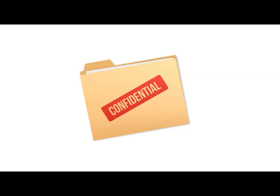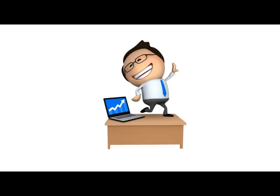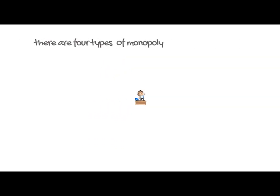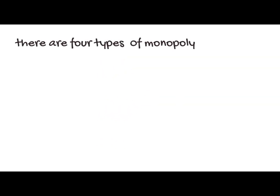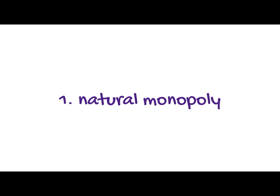Monopolies also possess some information that is not known to other sellers. Characteristics associated with a monopoly market make the single seller the market controller as well as the price maker. He enjoys the power of setting the price for his goods at a higher scale. There are four types of monopolies.